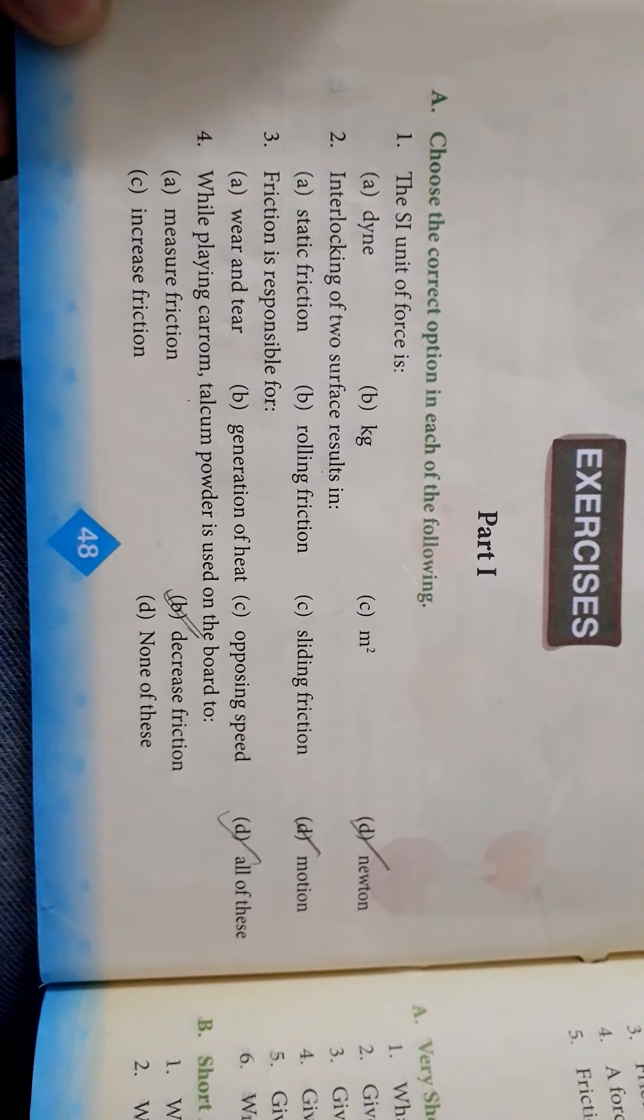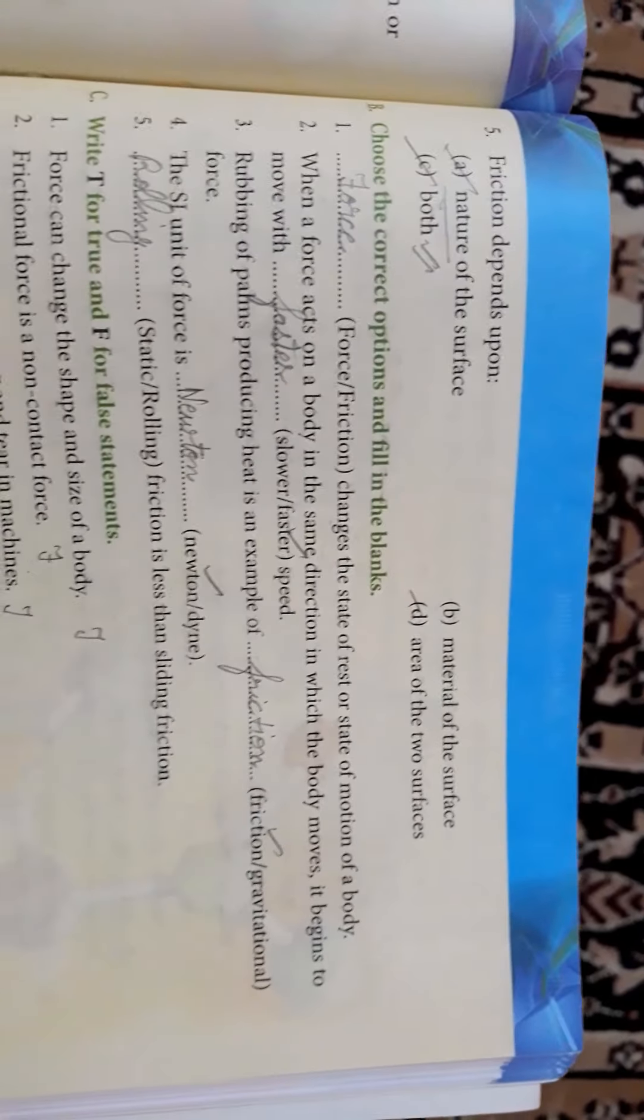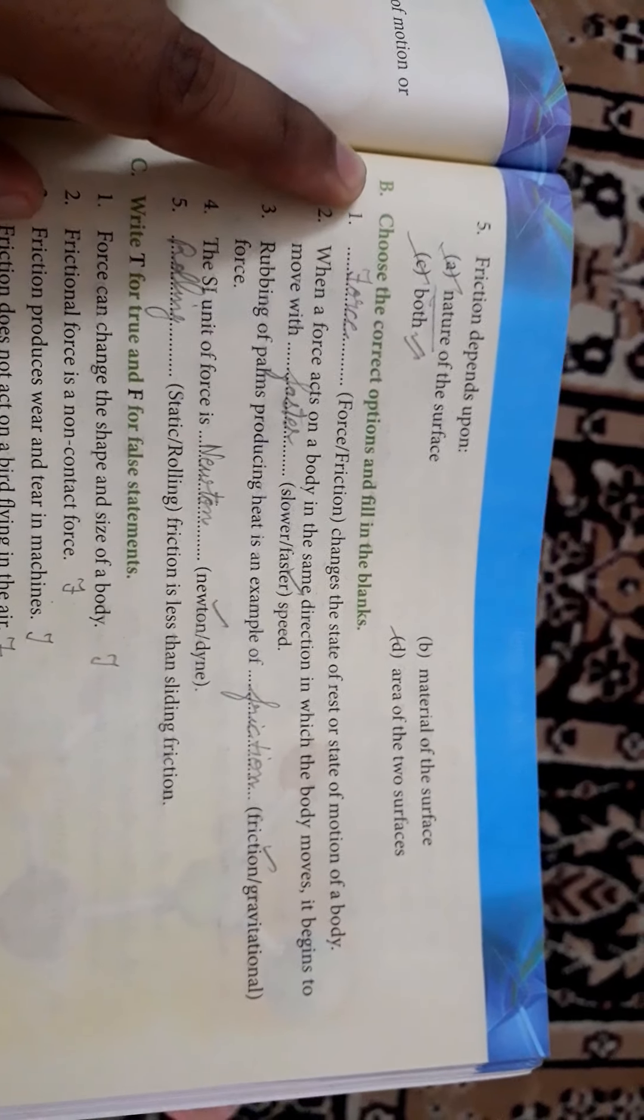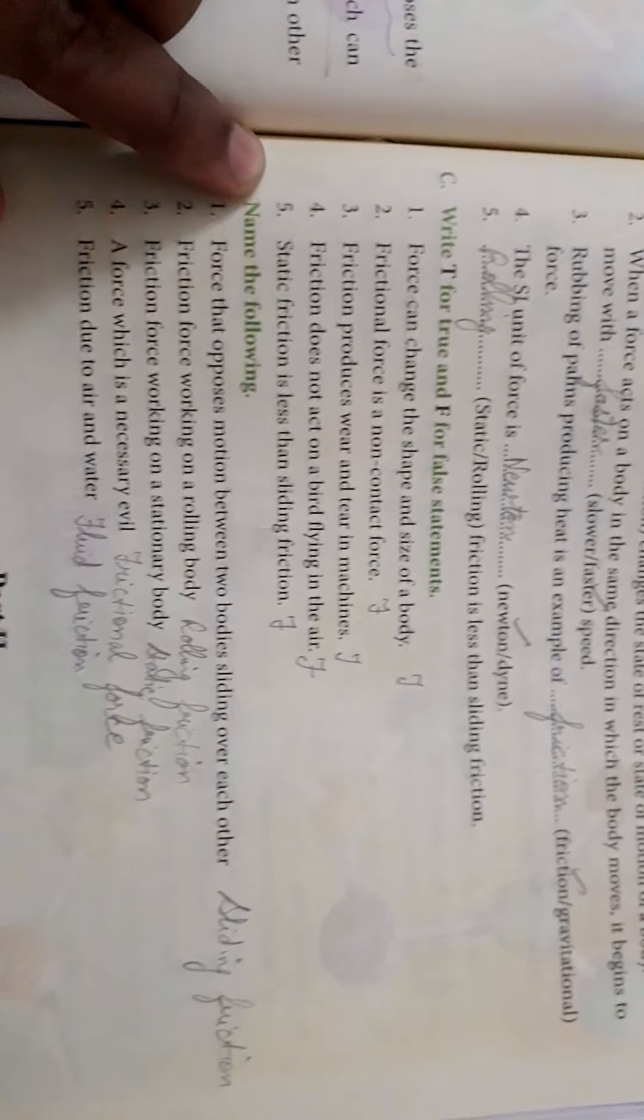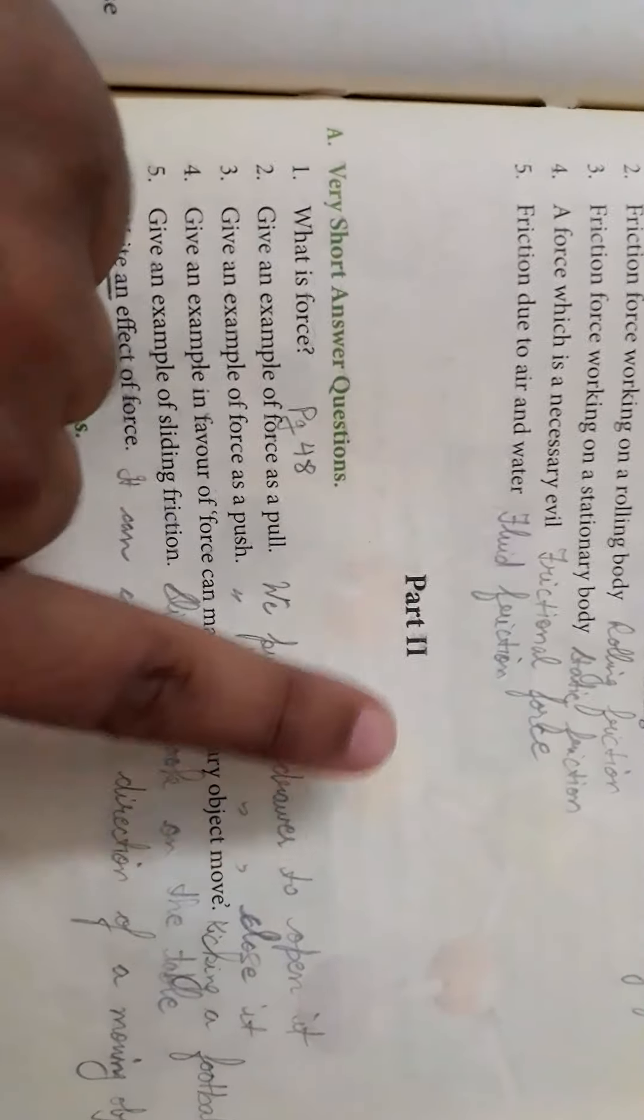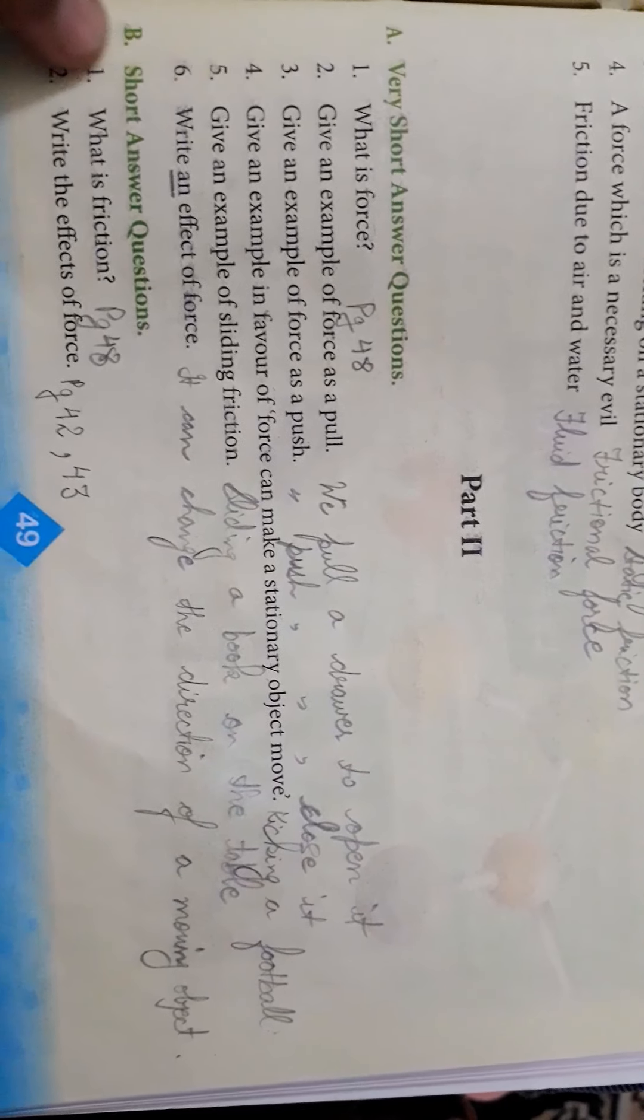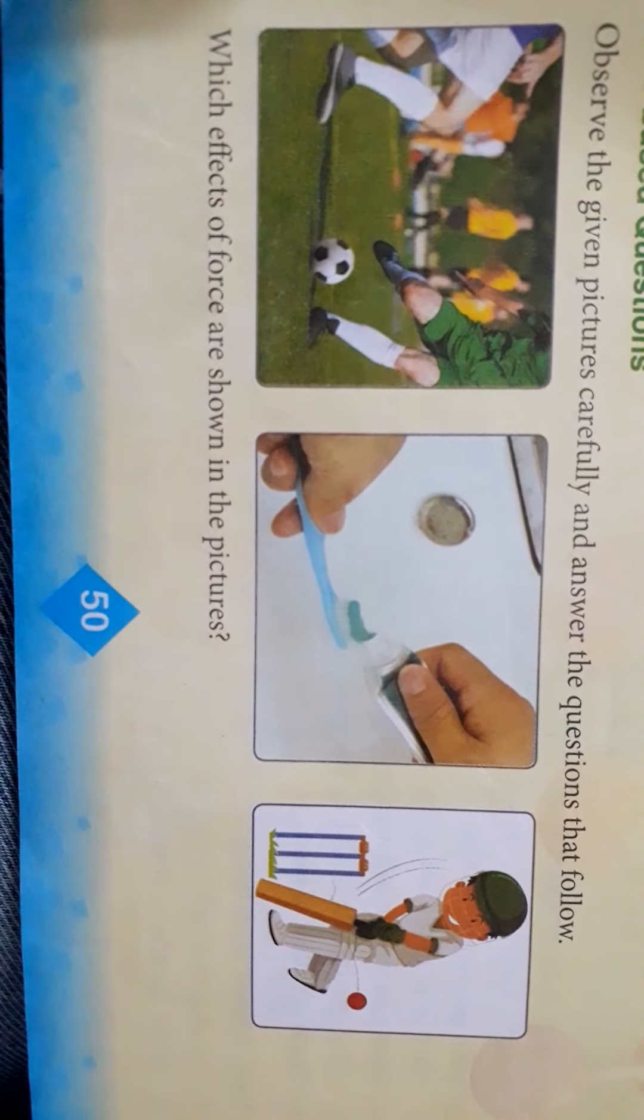You will get multiple choice questions, that is Part A. And in B you will have filling the blanks, true false, as well as one word answers—name the following. In the second part you will have all the question answers starting with very short answers, short answers, and on the next page you will find long answers. That is on page 50.